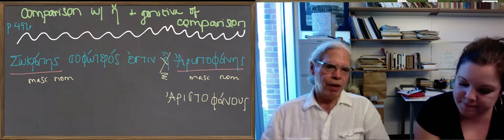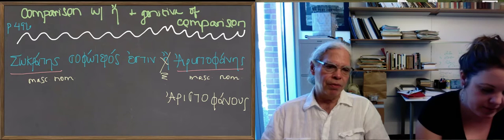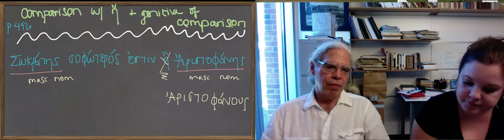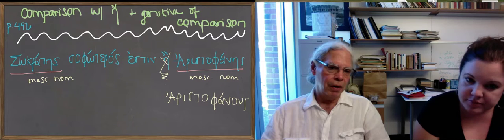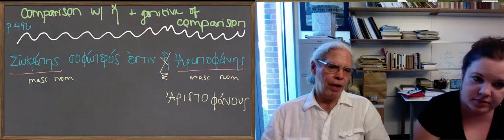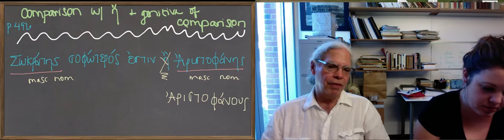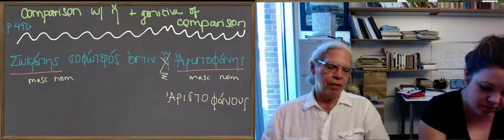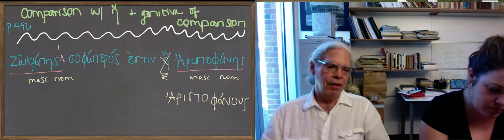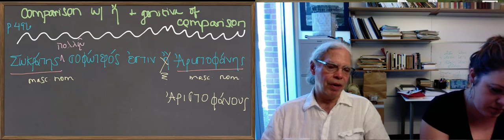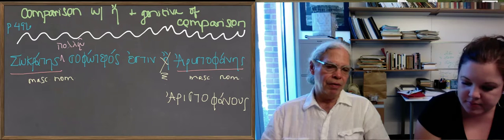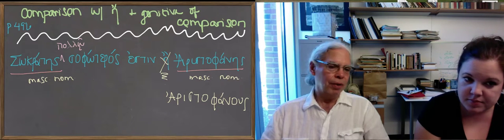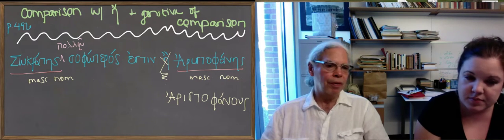So how do you do adverbs with adjectives? Well, in this case, what Greek did is put the a little that qualifies wiser in the dative case. So you have what's called the dative of degree of difference. So a lot wiser, a little wiser, you would think that that would matter, but the construction is the same for both.